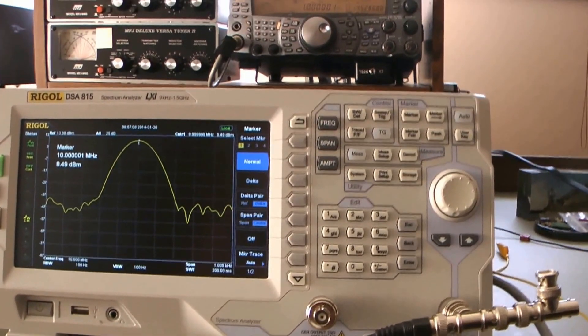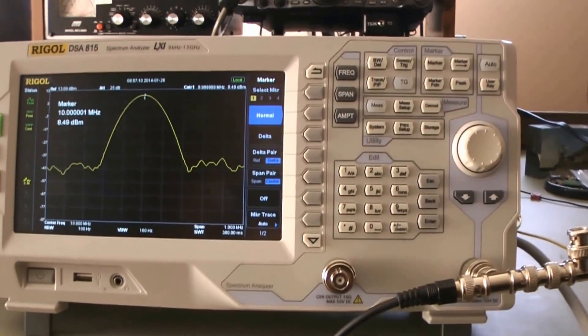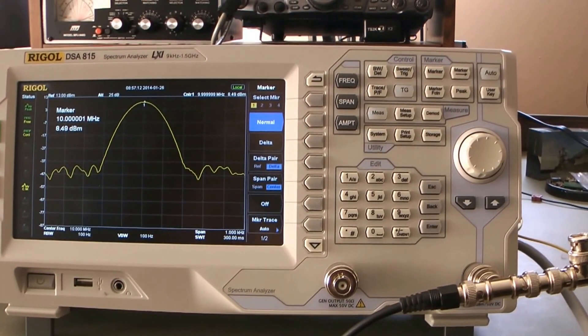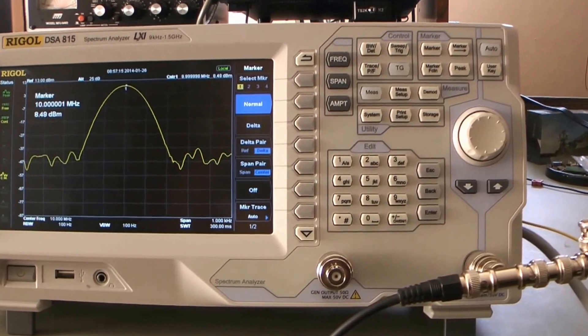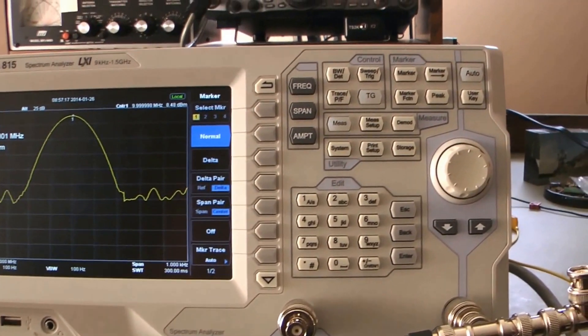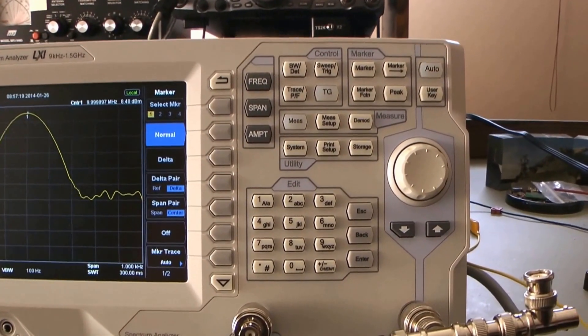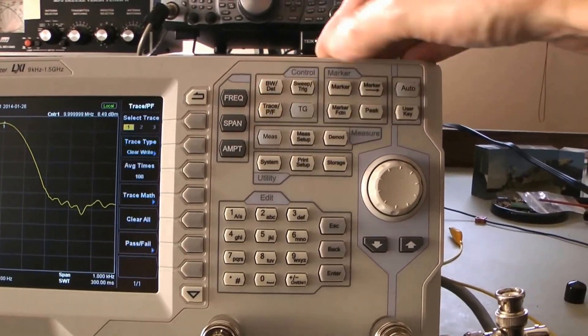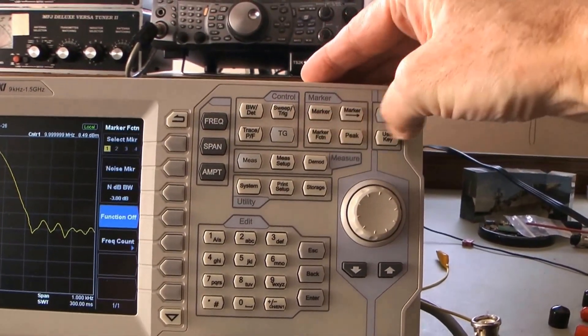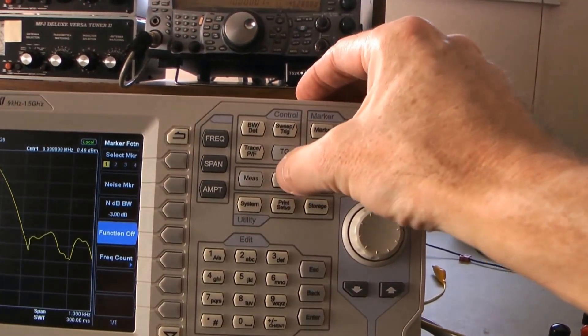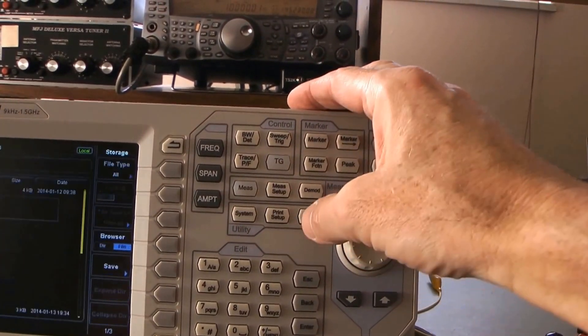Next thing to do is understand how you put it into calibration mode, and the Rigol documentation isn't very clear on that. So what you start off with is trace, tracking generator, function marker, measuring setup, system, print setup, storage.